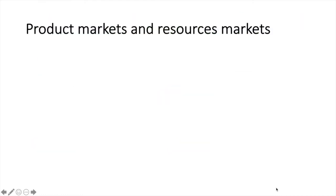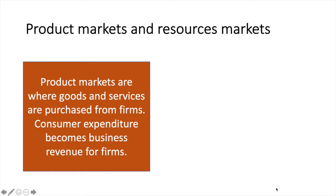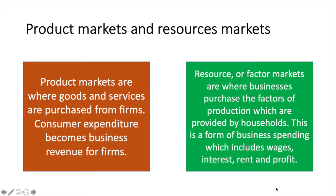We also need to distinguish between product markets and resource or factor markets. Product markets are where goods and services are purchased from firms — consumer expenditure becomes business revenue for firms. Resource or factor markets are where businesses purchase the factors of production, which are provided by households. This is a form of business spending which includes wages, interest, rent, and profit.